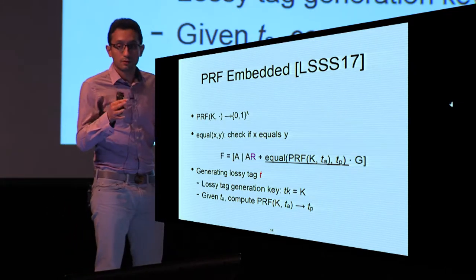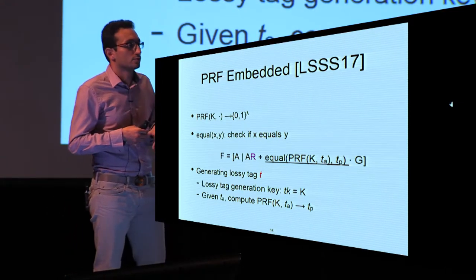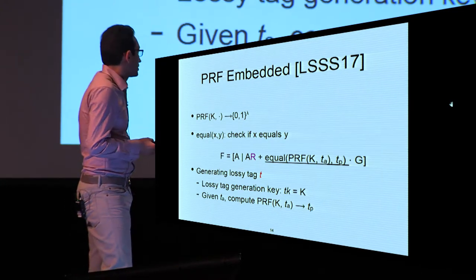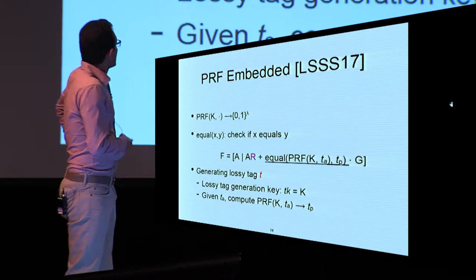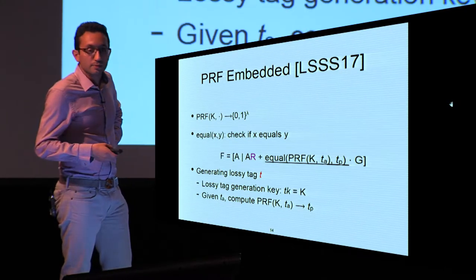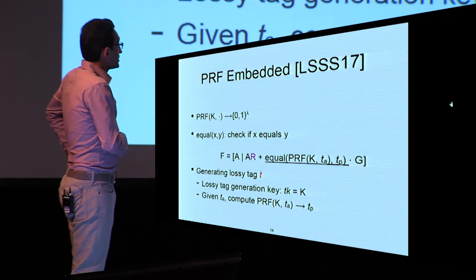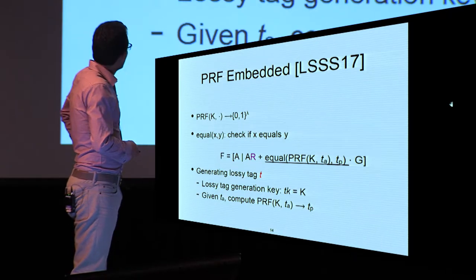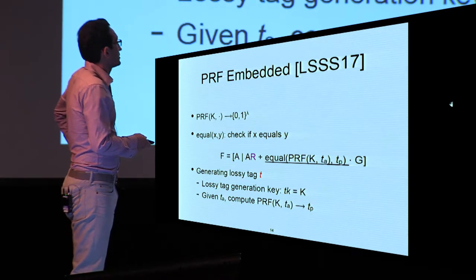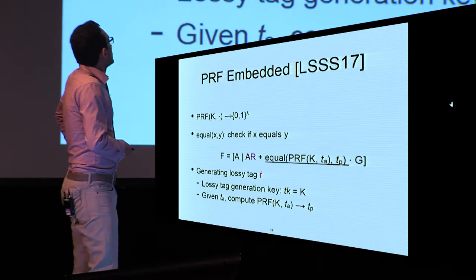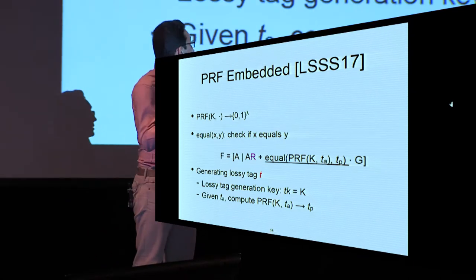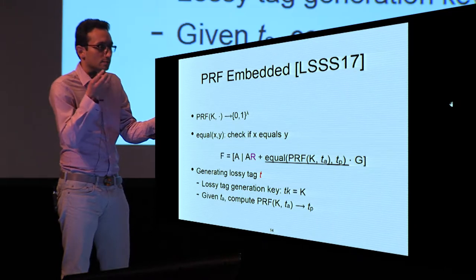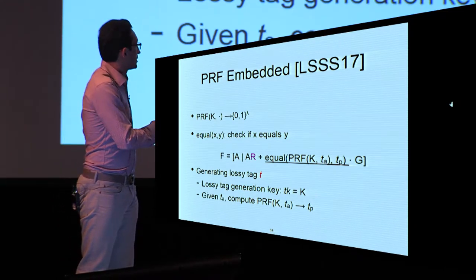Where do we plug PRFs into ABMLTFs? The idea from LSS17 is to use PRFs, which are conceptually simpler than weak PRFs, making the construction simpler than BL17. We use an equality circuit checking if x equals y, and plug in the equality of the PRF evaluated at the auxiliary part of the tag TA against the primary part TP. This equality plays the role of H — the whole underlined expression becomes H — for the injective mode.